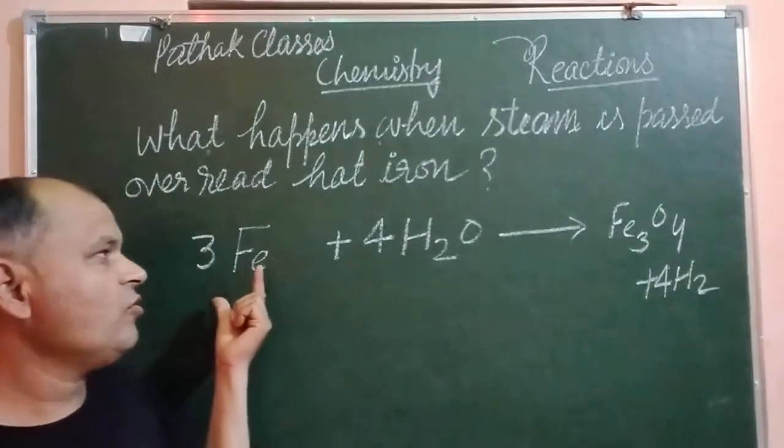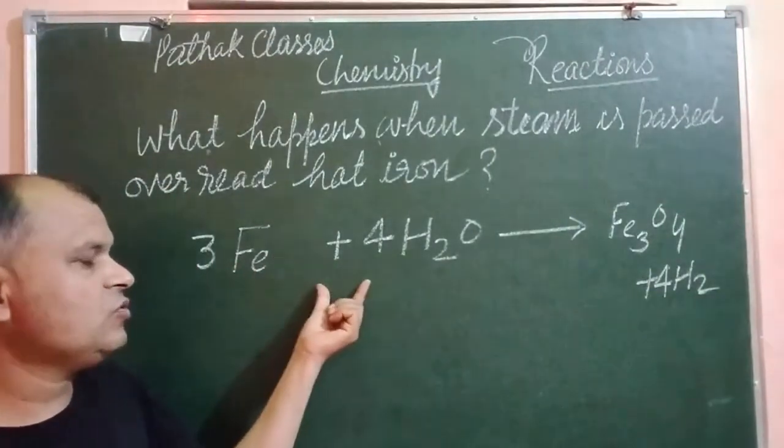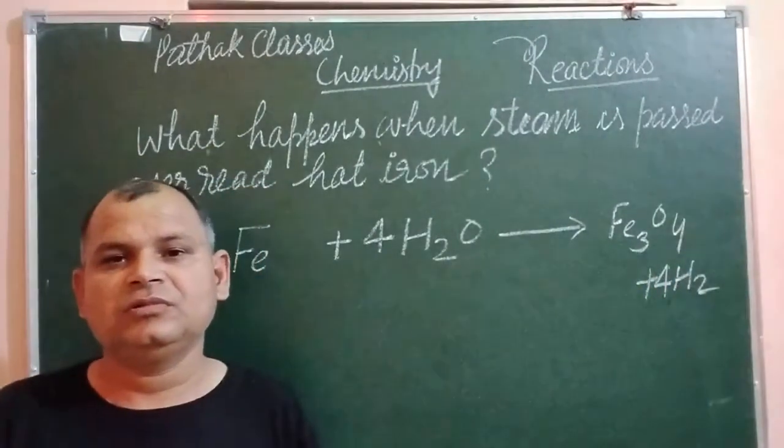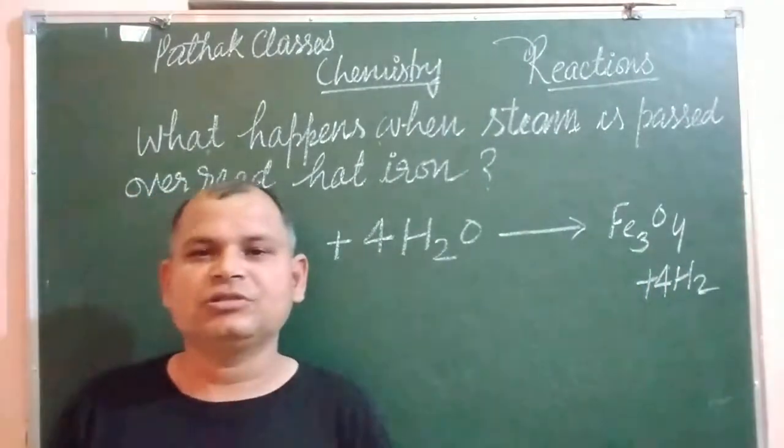So 3 Fe plus 4 H2O equals Fe3O4 plus 4 H2. I hope you understand this well. Thanks for watching.